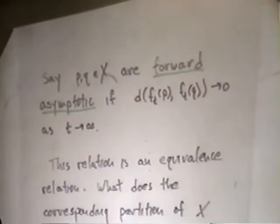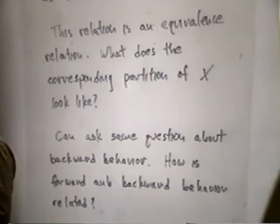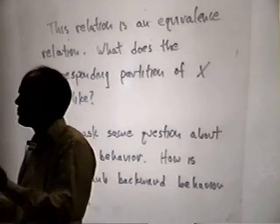This defines some sort of equivalence relation or partition on the space X of initial conditions. We could rephrase our question as understanding this partition on the space X. Of course, we also get a partition if we consider behavior in backward time. So we have two partitions that we'd like to understand, and also we want to understand the relationship between these two partitions.